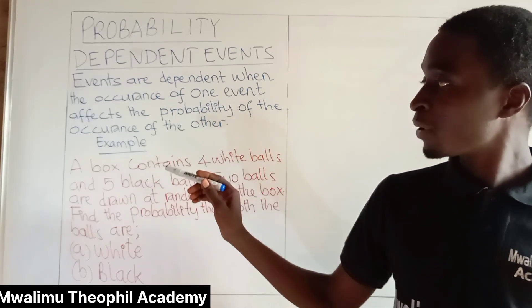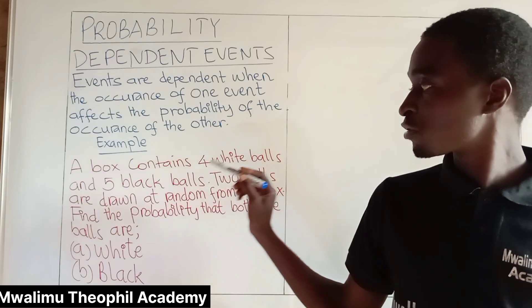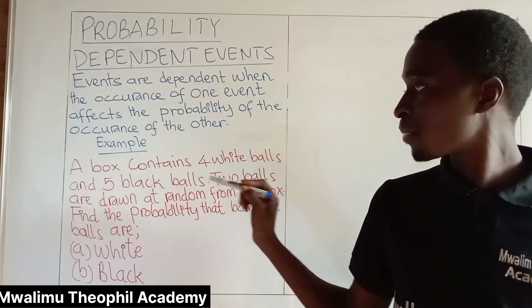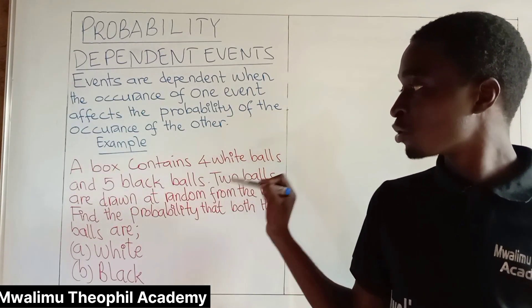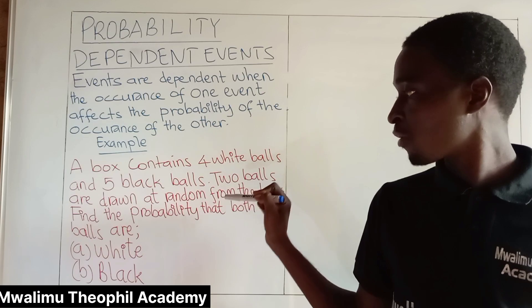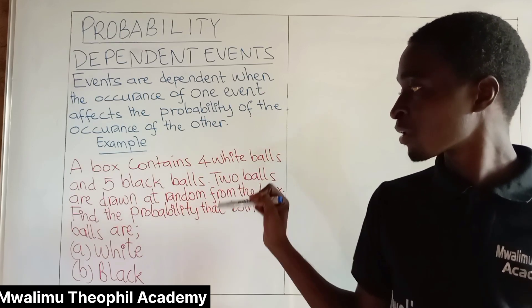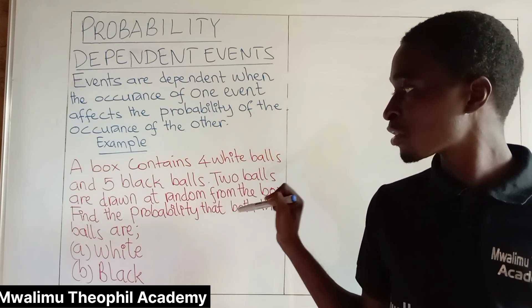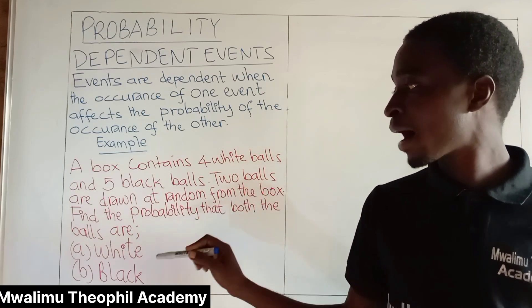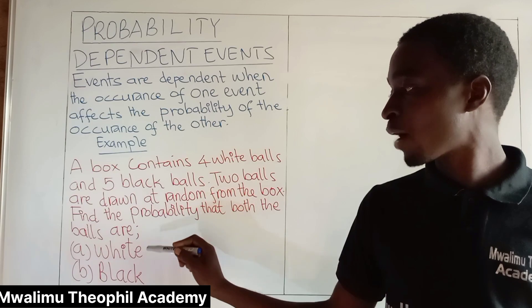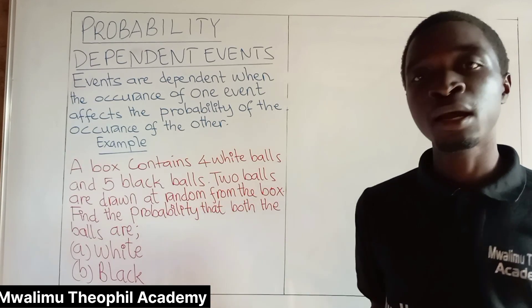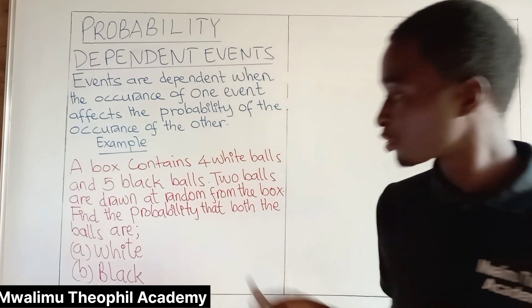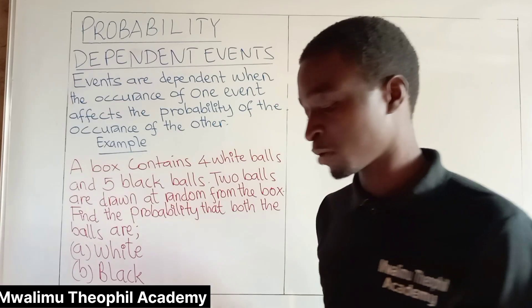It is stated that a box contains four white balls and five black balls. Two balls are drawn at random from the box. Find the probability that both the balls are: A, white; B, black. Let us see the solution for this problem.